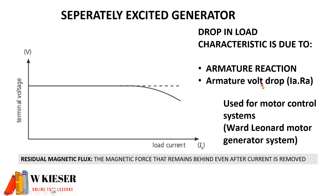In terms of the application for separately excited generators, they are used for motor speed control systems such as the Ward-Leonard motor generator system. The term residual magnetic flux refers to the magnetic force that remains behind even when current is removed from the machine.